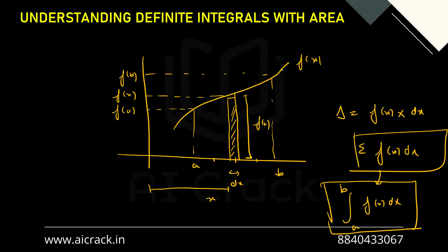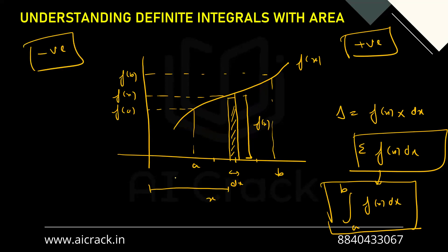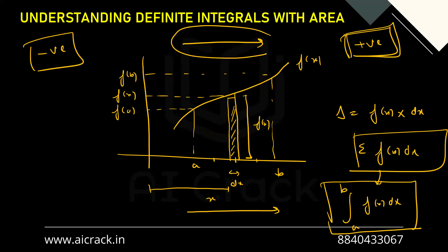One important thing: whenever the curve is above the x-axis, the area comes out as positive. And whenever the curve is below the x-axis, the area comes out as negative. Mind that we are going from here to here — from left to right. So when going from left to right and the function is above the x-axis, the area is positive. When going from left to right and the function is below the x-axis, the area is negative. We are going from a to b, from left to right.